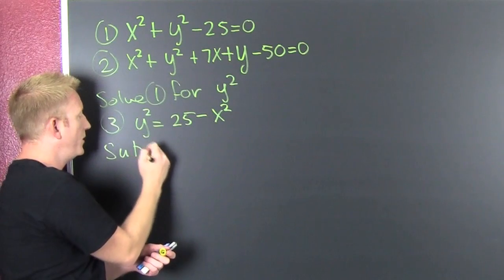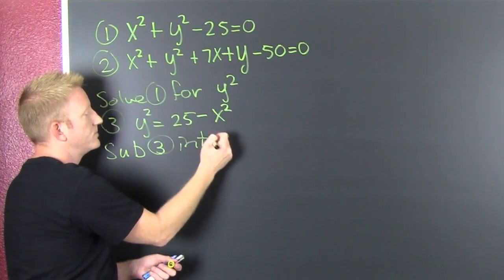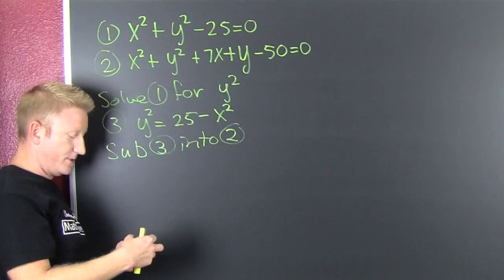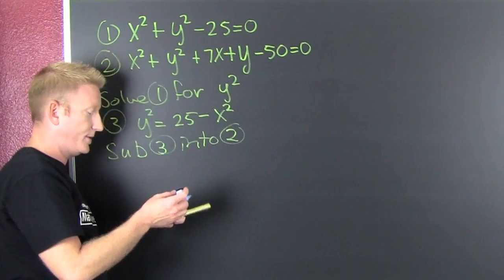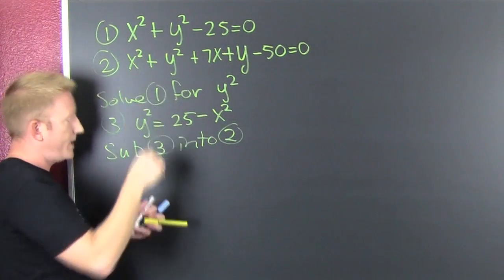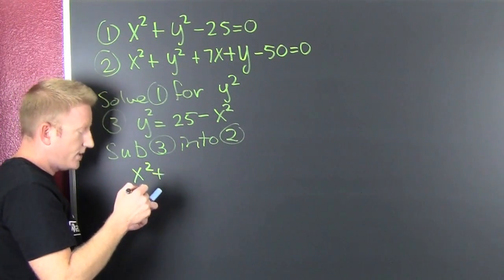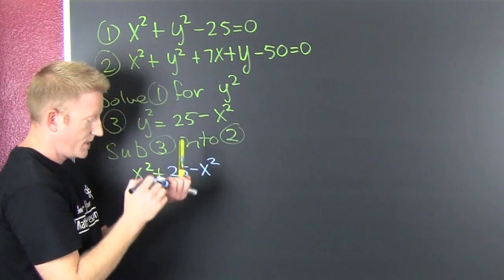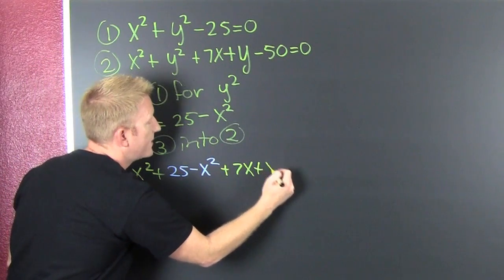I'm gonna sub 3 into 2. And here's why: I'm gonna eliminate each one of those variables one at a time. I'm gonna take that and sub it in there. So everywhere I see a y squared I'm now gonna put 25 minus x squared, and that's still gonna be plus 7x plus y minus 50 equals 0.